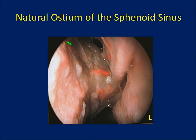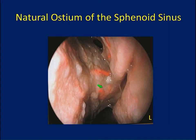An important relationship to understand — here's a left-sided specimen — is the relationship between the natural sphenoid ostium and the choanal arch. These two vascular structures are the posterior septal branches of your sphenopalatine artery. These are critical to the nasal septal flap, which is our primary reconstructive tool for many of our endoscopic skull base cases.